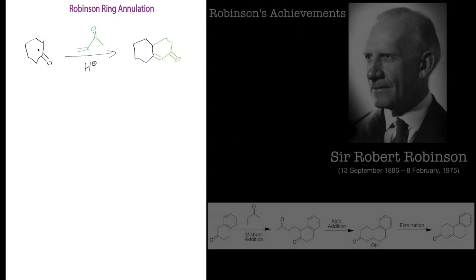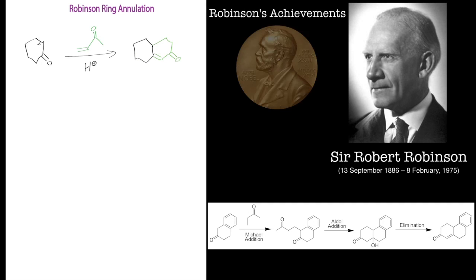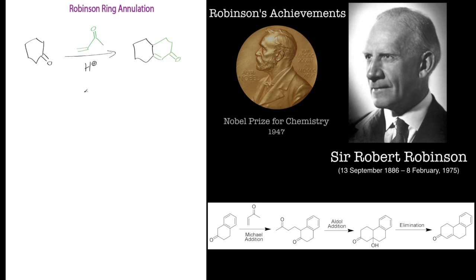In this tutorial we're going to go over the Robinson ring annulation reaction. This takes a ketone and an alpha-beta unsaturated ketone and creates an alpha-beta unsaturated ketone. Before I begin I need to talk a little bit about keto-enol tautomerism. There are tutorials on keto-enol tautomers in acidic and basic conditions. I'm going to use the acidic example, and the whole reaction mechanism will be under acidic conditions.